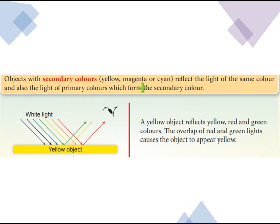Objects with secondary colors — yellow, magenta, or cyan — reflect the light of the same color and also the light of the primary colors which form the secondary color. For example, a yellow object reflects yellow, red, and green colors. The overlap of red and green lights causes the object to appear yellow.